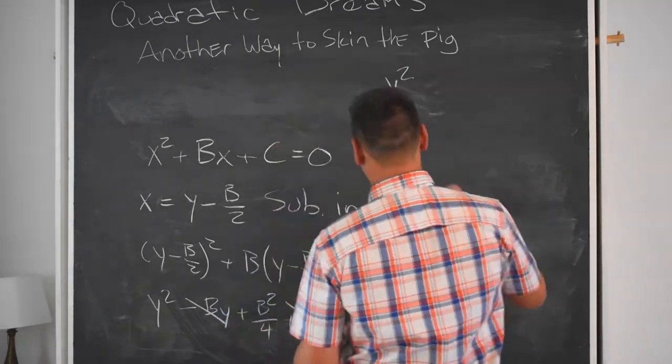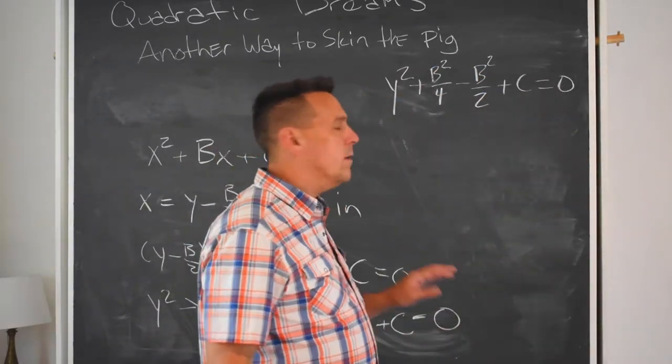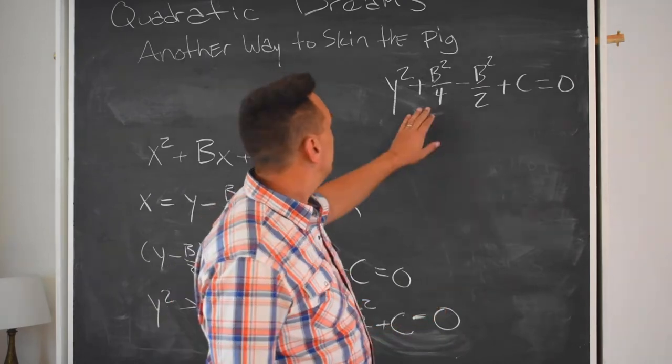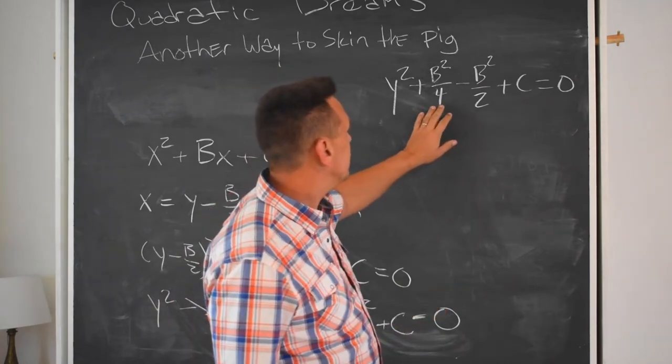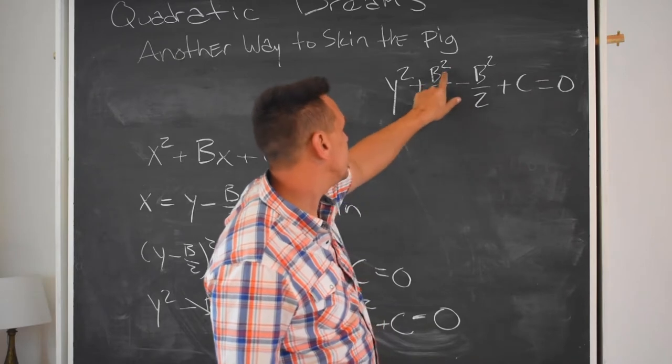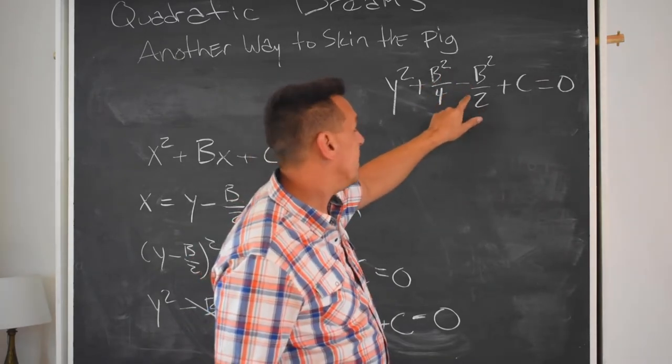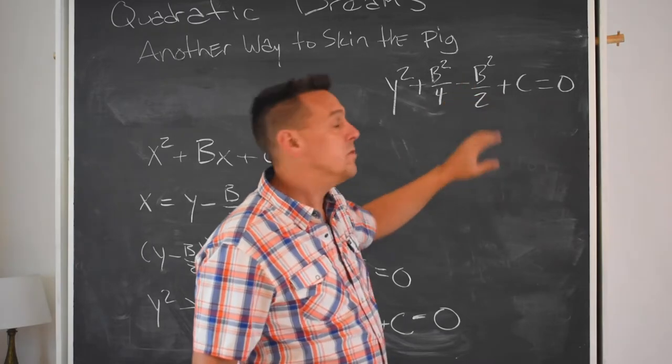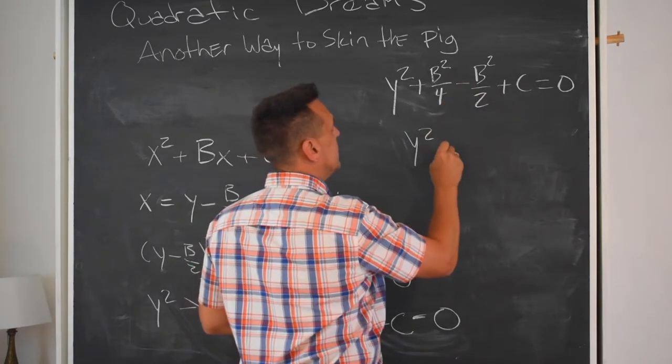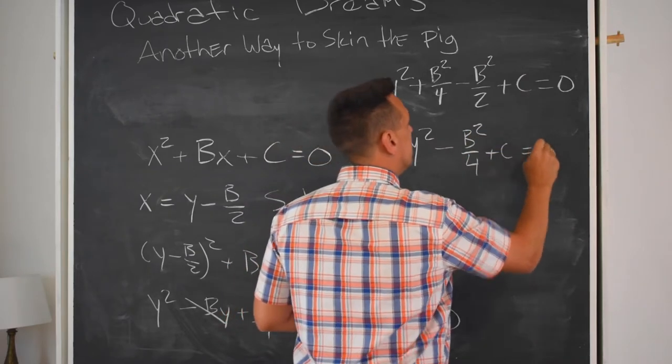Y squared. I know fractions make people itch, but let's think about this a little bit more generically. Whatever b squared is, this is half of it. And whatever b squared is, this is a quarter of it. And if I've got positive a quarter and negative a half, then I've got negative a quarter.